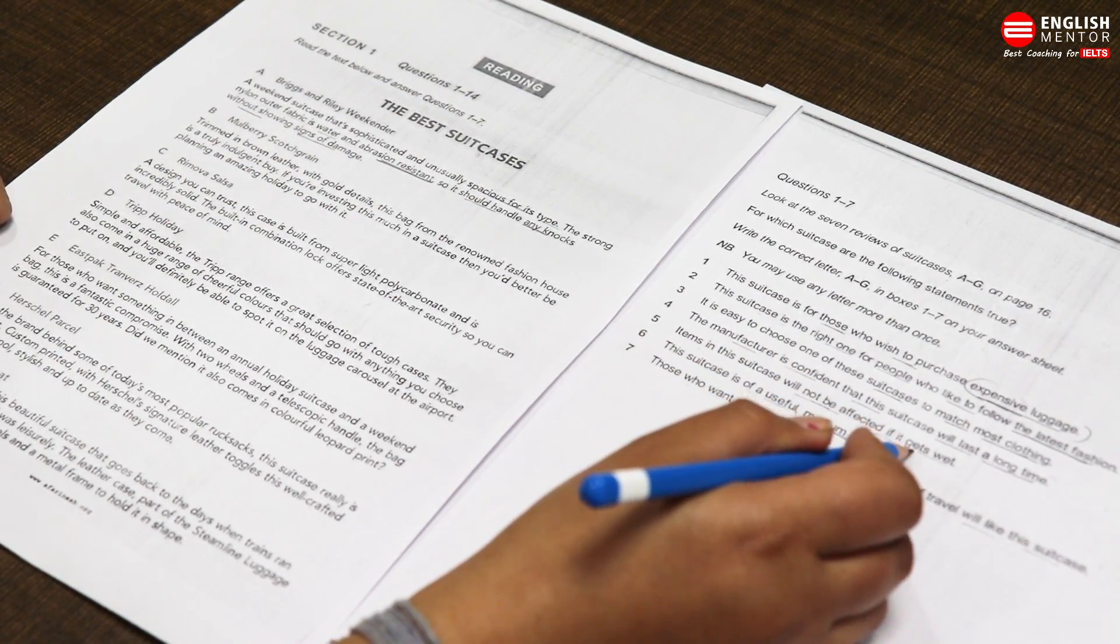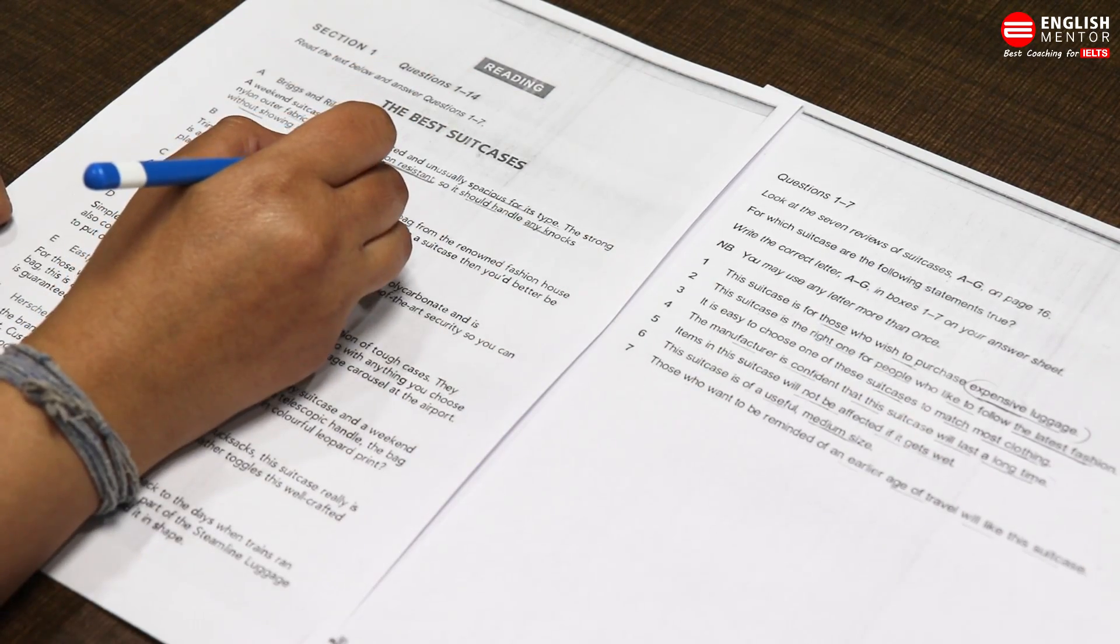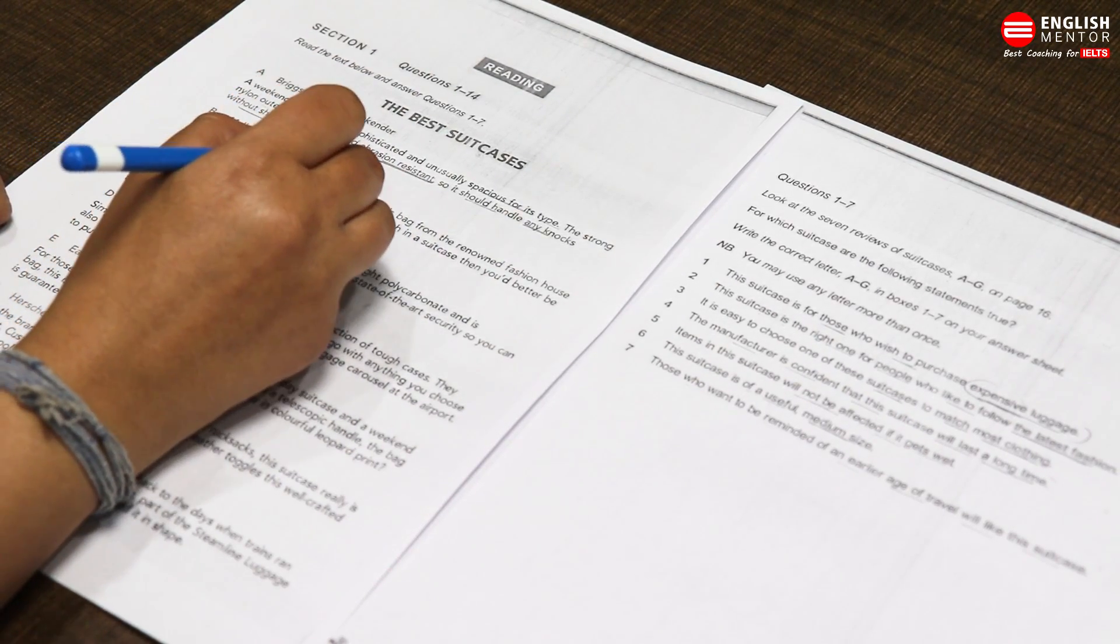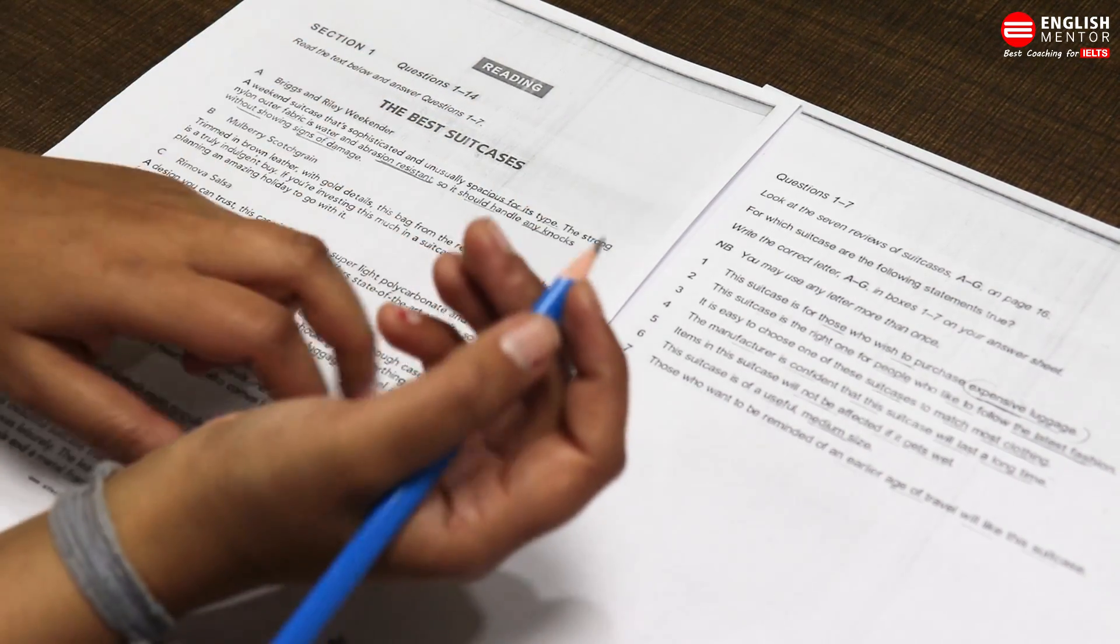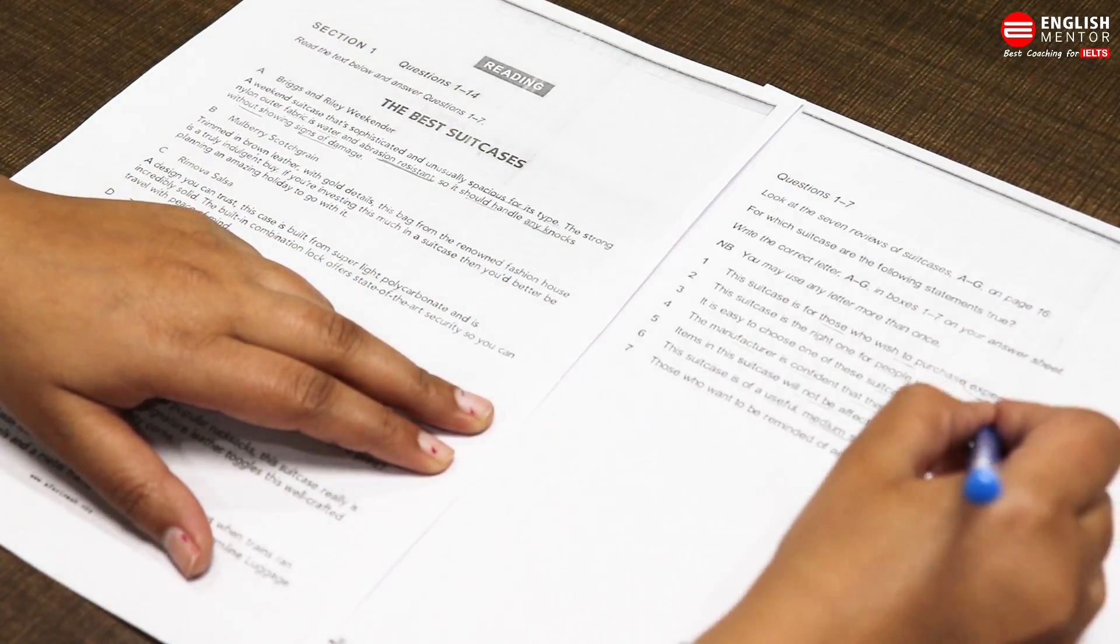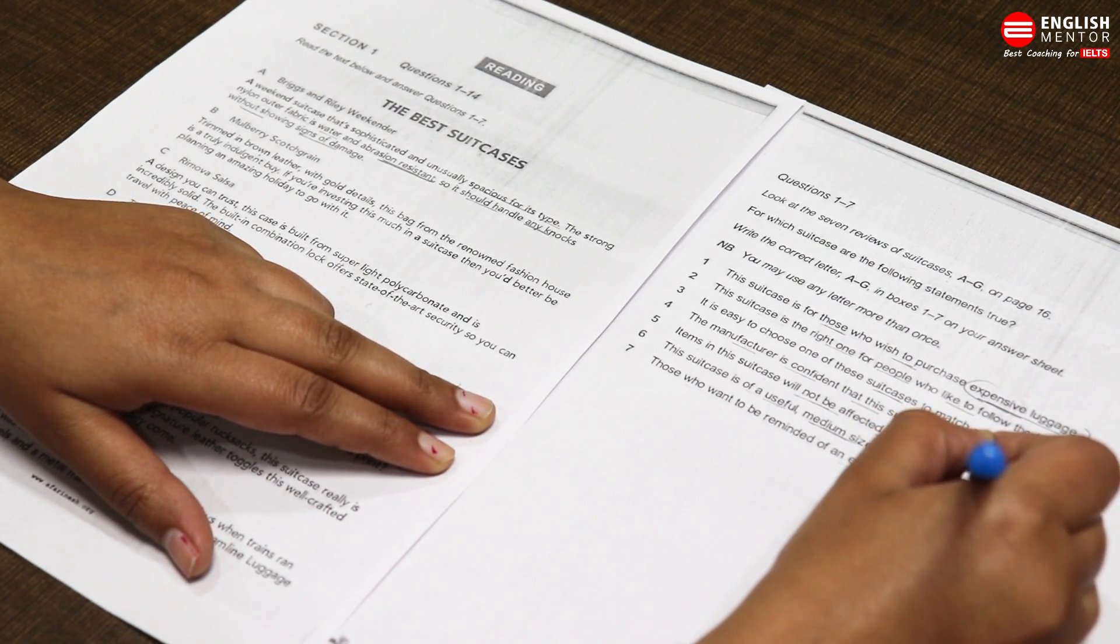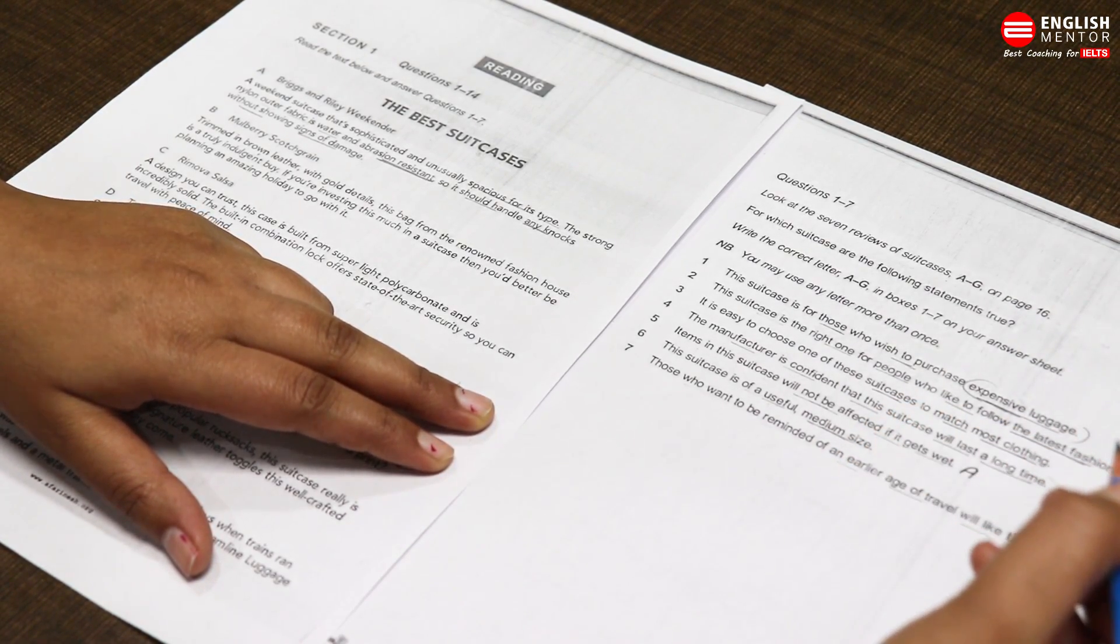This will not show any sign of damage, it has resistance, so the items inside will not be affected. If we remember question five: items in this suitcase will not be affected if it gets wet. Here we're talking about resistance, without showing sign of damage, so your luggage is safe in this kind of suitcase. For question number five, I will mark A.